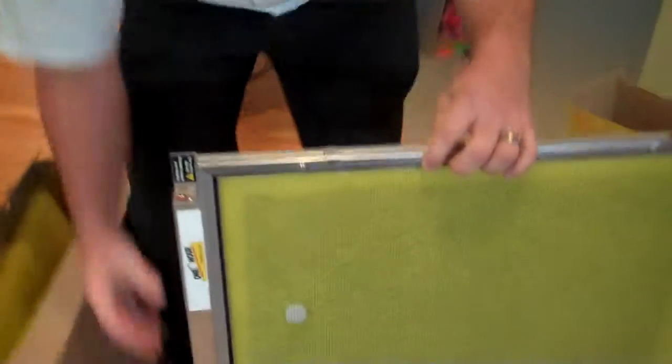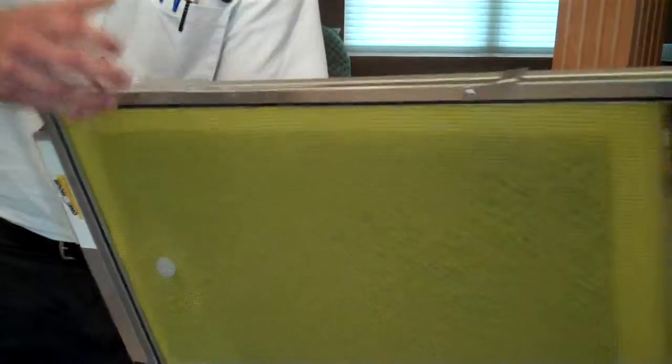Then you'll take this out just like your normal filter. You'll take it out of the slot, and then flip these open. Then this will come out. You take it out, throw it away, and put your new one in there.